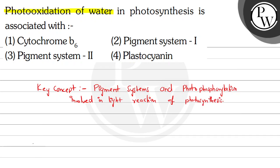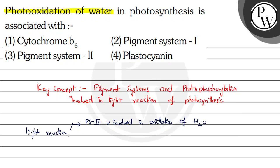In the light reaction, there are two types of photosystems: PS2, which is involved in oxidation of water, and PS1, which has the NADP reductase enzyme.